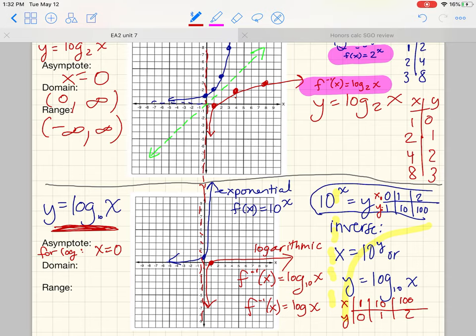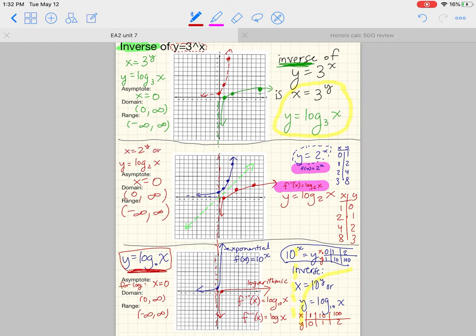The domain of the log graph, the domain of this log graph, looks like it's everything above 0. And the range for this log graph looks like it's anything you want it to be, which again would be the switching of the exponential domain and range. So those were some things I had left off.